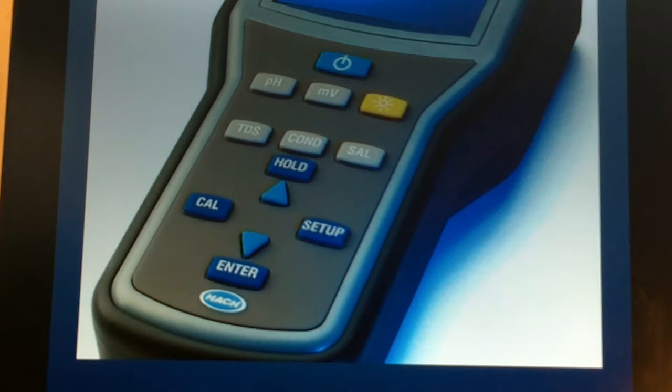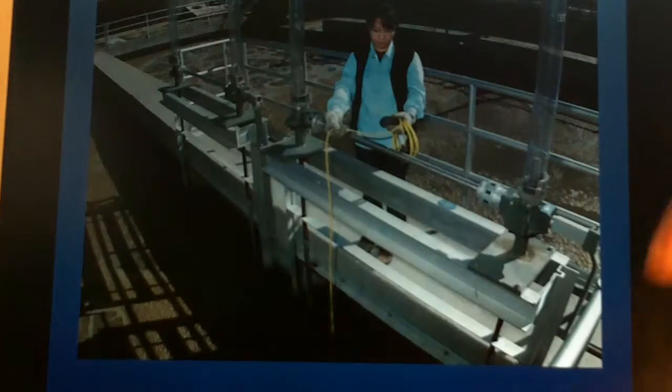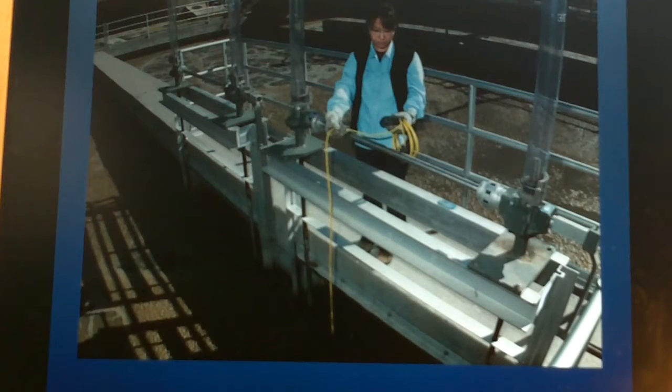This is showing an example of how somebody would use the probe to extend it down into water. For most of our uses we're dealing with something that's right there within our grasp and we can maybe just bend over and put it into our reservoir or into our system. We really don't need something that's 10 feet long to drop a probe down to test our pH. This is showing the example in a wastewater treatment facility how we would use that in the environmental field.